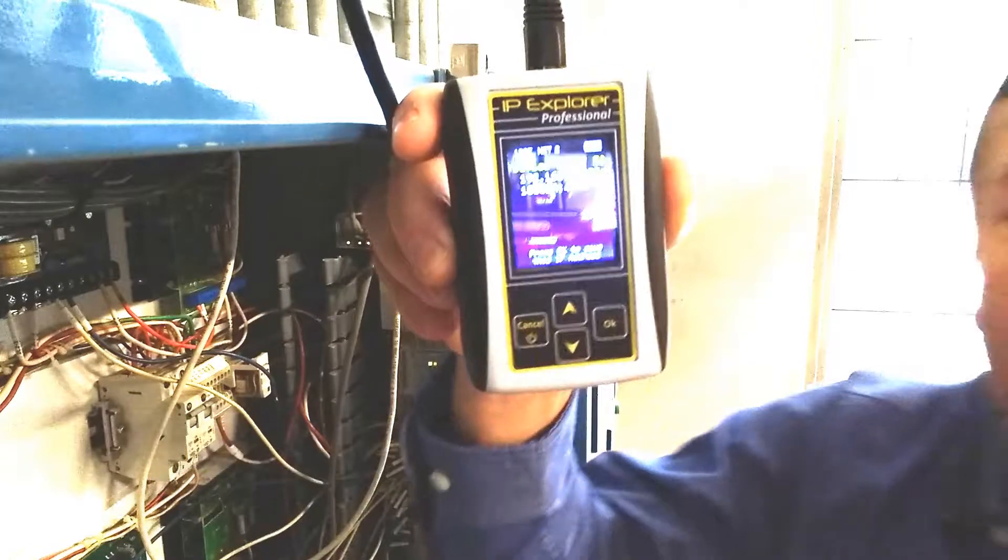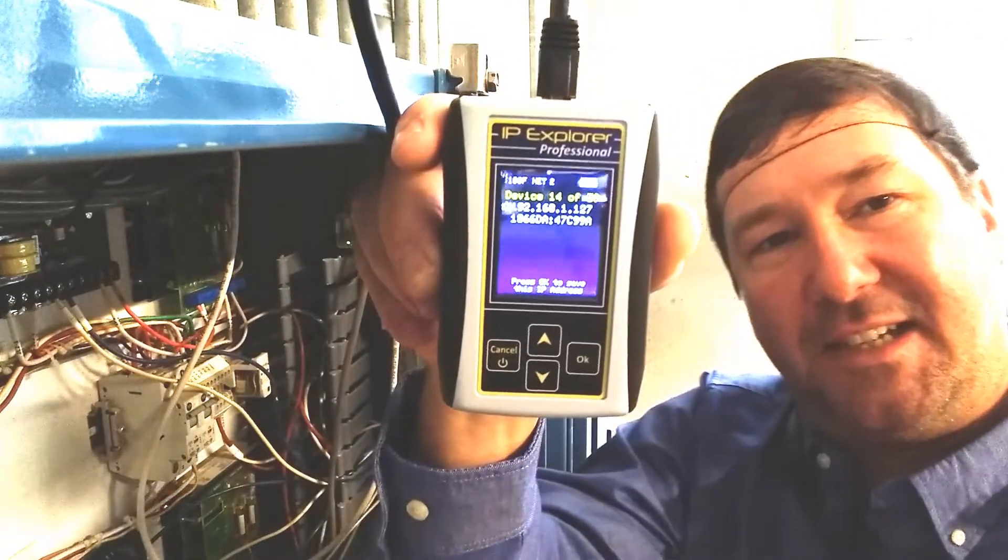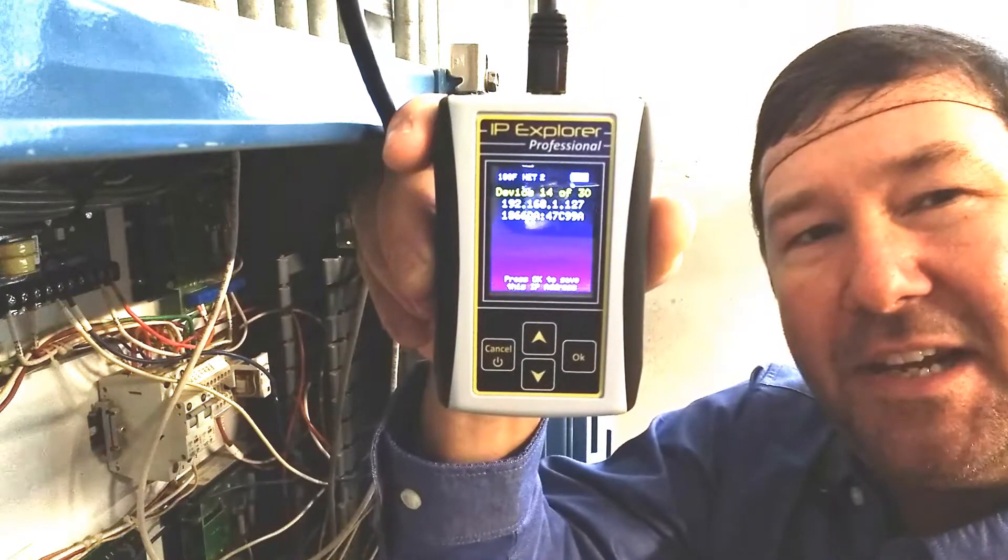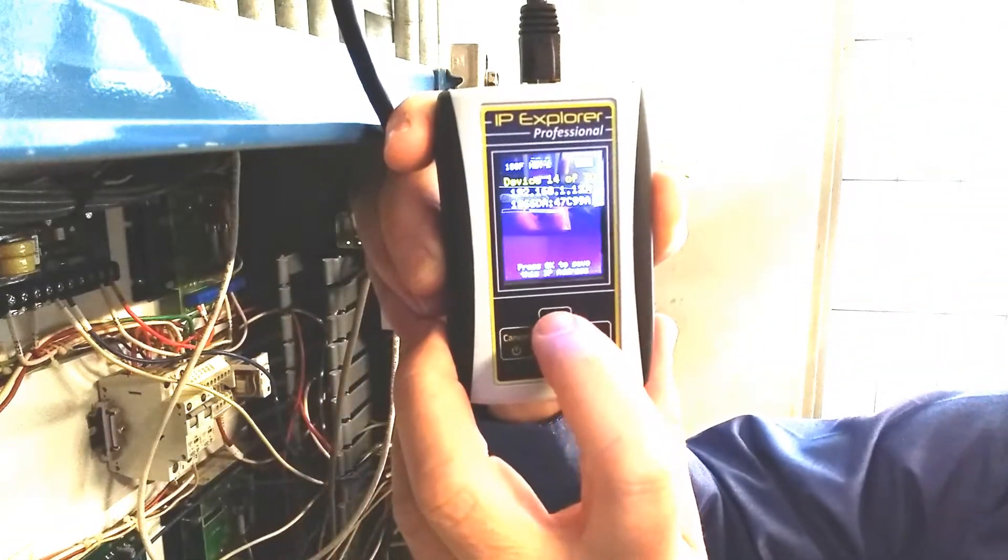We have some blank ones, and what this means is we know its IP address and its MAC address, but we can't necessarily determine what it is. So it's probably some device that is non-Ethernet IP compliant.